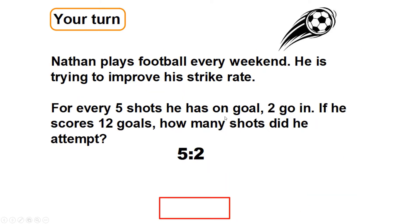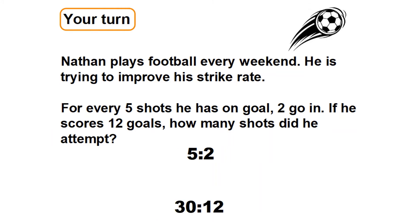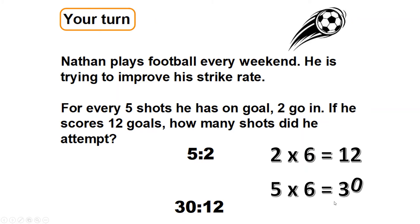Nathan plays football every weekend. Every five shots he has on goal, two go in. If he scores 12 goals, how many shots did he attempt? Think: what do I need to do to two to make it 12? Whatever I multiply the two by, I do the same to the five. Two, four, six, eight, ten, twelve — times it by six. So five times six equals 30. He took 30 shots.